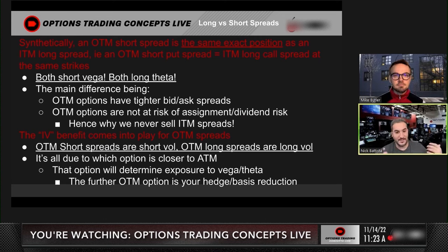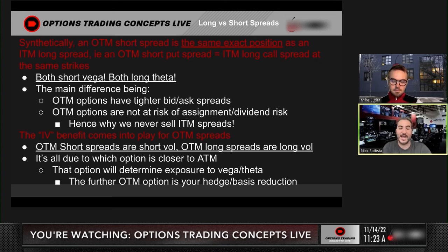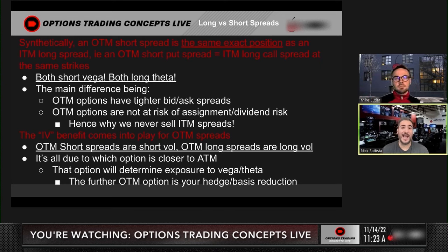The main difference is the bid-ask spreads and also the assignment risk that comes with those positions. If you're long the in-the-money long call spread, you have assignment risk on that short call — so you could potentially be short stock. That could come into play with dividend risk on that position. When we talked about the box spread, we were looking at XOM, which has a dividend coming up, and that's why that spread was trading for more than the width. Same thing applies here. That's why we don't sell or buy in-the-money spreads — because you can get the same position via an out-of-the-money position.